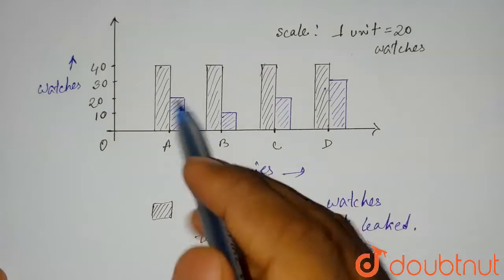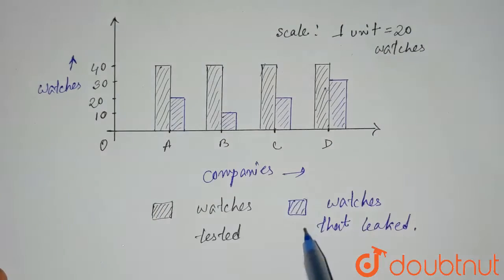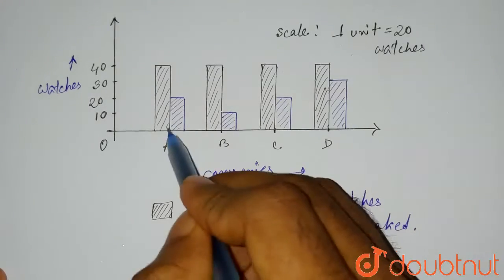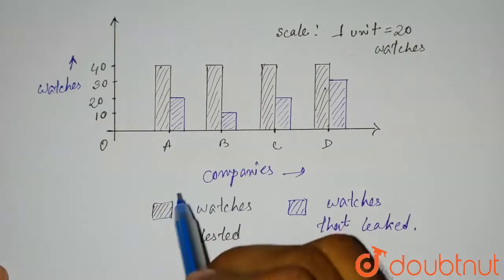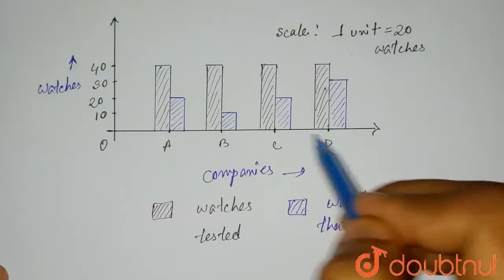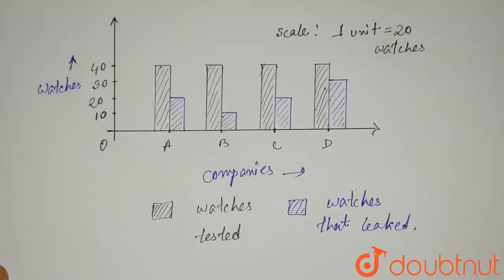That means if we consider the blue bars only, which are showing the amount of leaked watches, we can see that A company has 20 units, 20 units of leaked watches. B company has 10, C company also has 20, and D company has 30 units of leaked watches.